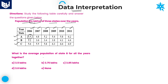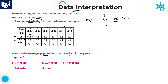Now we need to solve the questions according to the information. The first question is: what is the average population of state B for all the years together? Here we need to calculate the average of state B. As we all know, average is equal to sum of observations by number of observations. As we are calculating the average of entire population for state B, you need to take the sum of state B values.